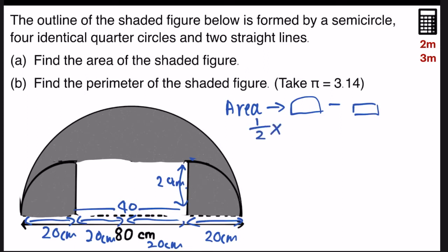So let's do that now by finding the area of the semicircle. Now, half times pi, which is 3.14, the radius is 40, because the diameter divided by 2 is 40. And I get 2,512.